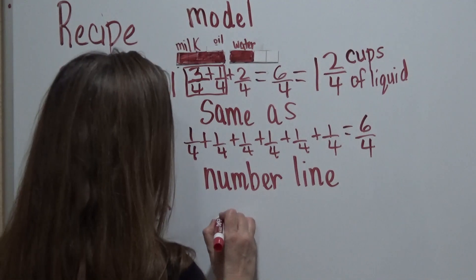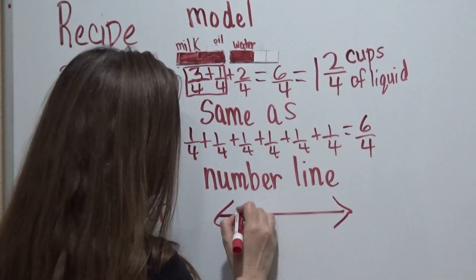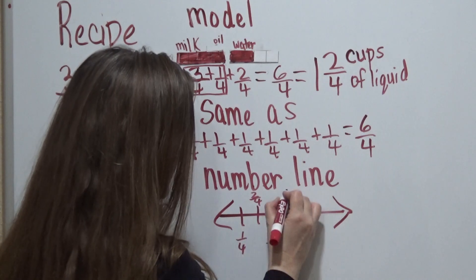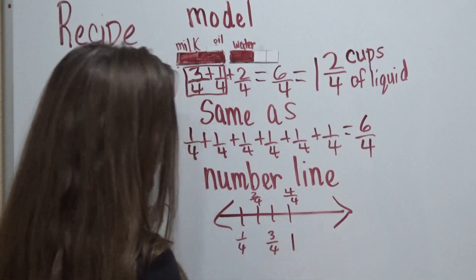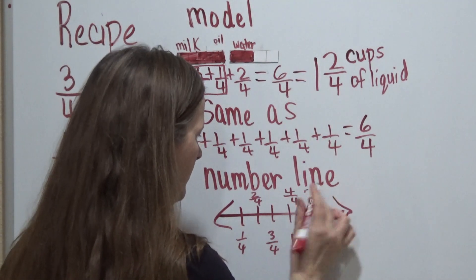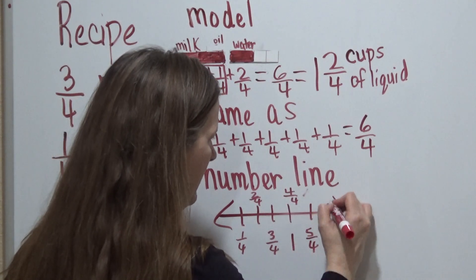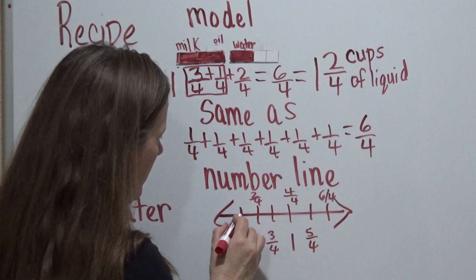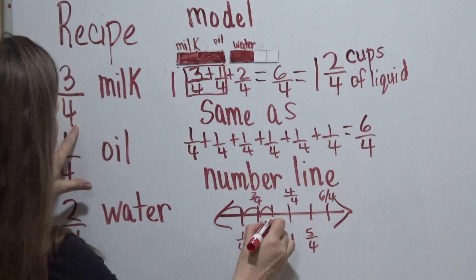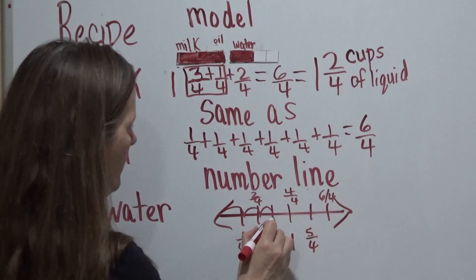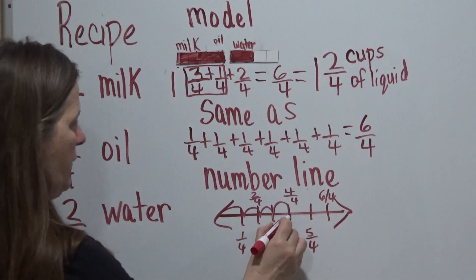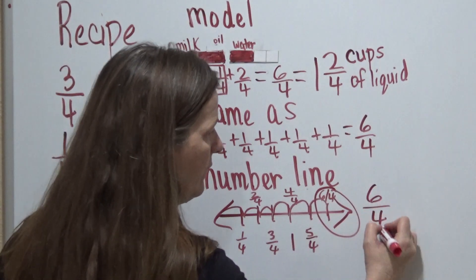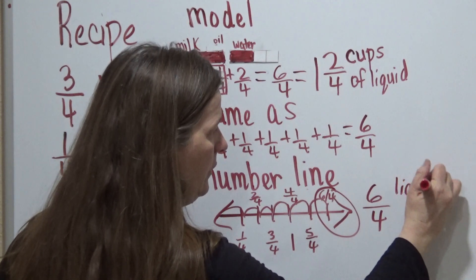Now let's go ahead and go to the number line — what would that look like? You would make your ticks: 1 fourth, 2 fourths, 3 fourths, 4 fourths which is 1 whole, 5 fourths, and 6 fourths. We're going from 3 fourths — so 1, 2, 3 — that's the milk. Then we go 1 fourth for the oil. And then we go 2 fourths for the water: 1, 2. And when we look at that, that's 6 out of 4. So our answer is 6 out of 4 for the liquid used to bake the cake.